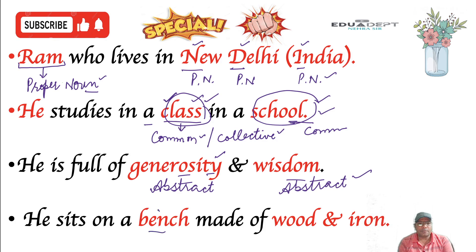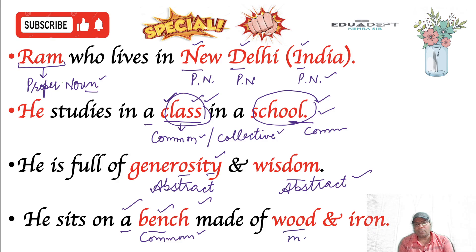Let's talk about bench. Bench apna common noun hai, kyunki saari ek jaisi dikhne wali cheezon ko hum bench bol sakte hain. Iske saath article ka use hota hai. Aur wood jo hai, apna material noun hai. Usi tarike se iron bhi apna material noun hai.